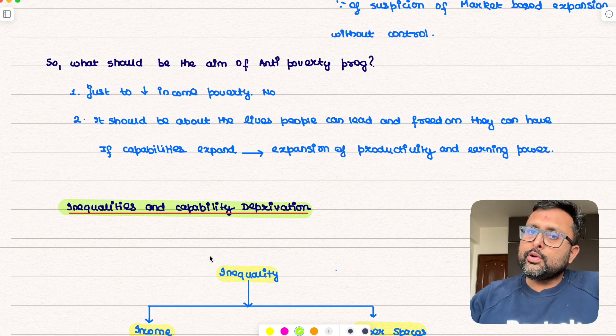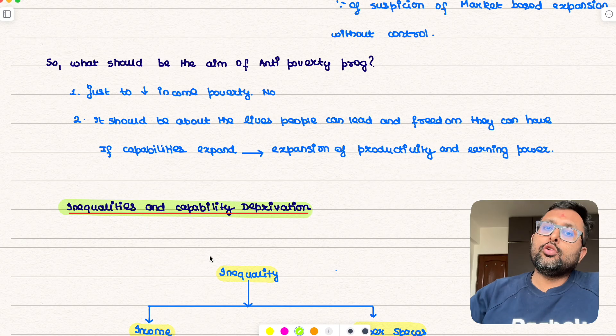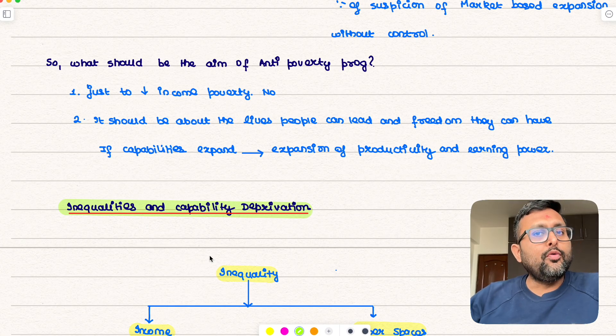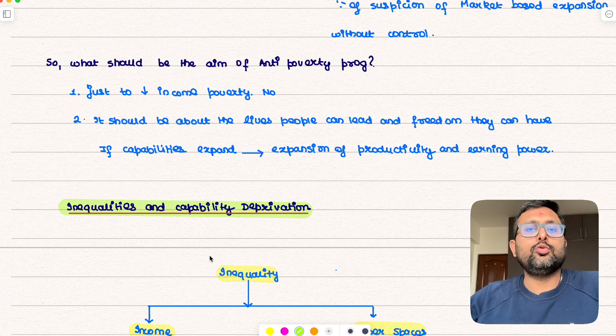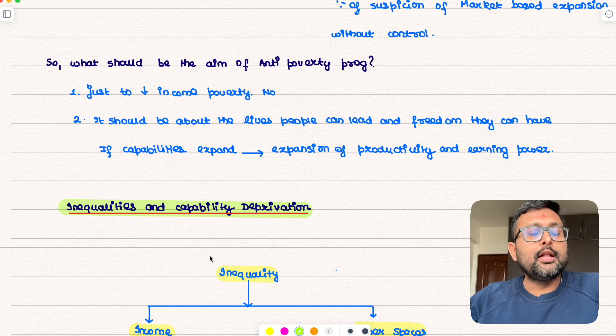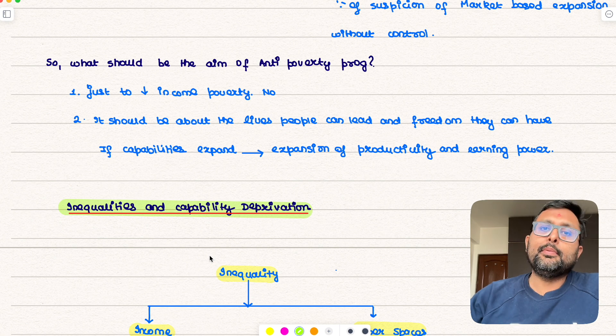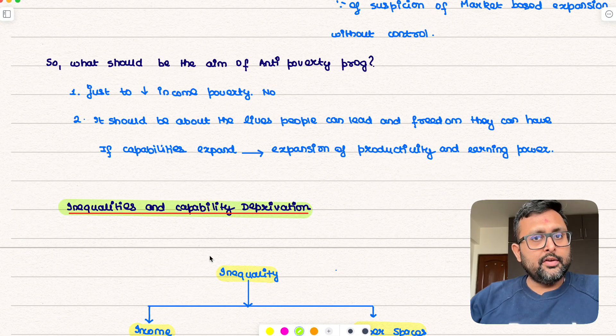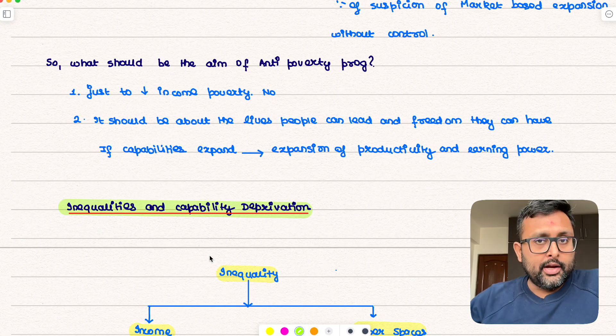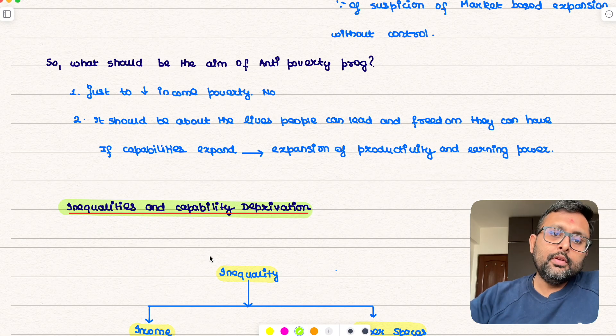We should not be so narrow-minded only in terms of thinking no, only income poverty should be reduced. There are poverty in other areas too. There can be poverty in terms of education, there can be poverty in terms of health. Those also have to be tackled. And the kind of argument which he is making is that if you take care of these, if you provide them better capabilities in these areas, then they will become more productive and hence they will enhance their own capacities to earn more income.